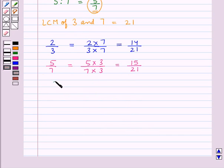So, we have now got 2 upon 3 is written as 14 upon 21 and 5 upon 7 is written as 15 upon 21.